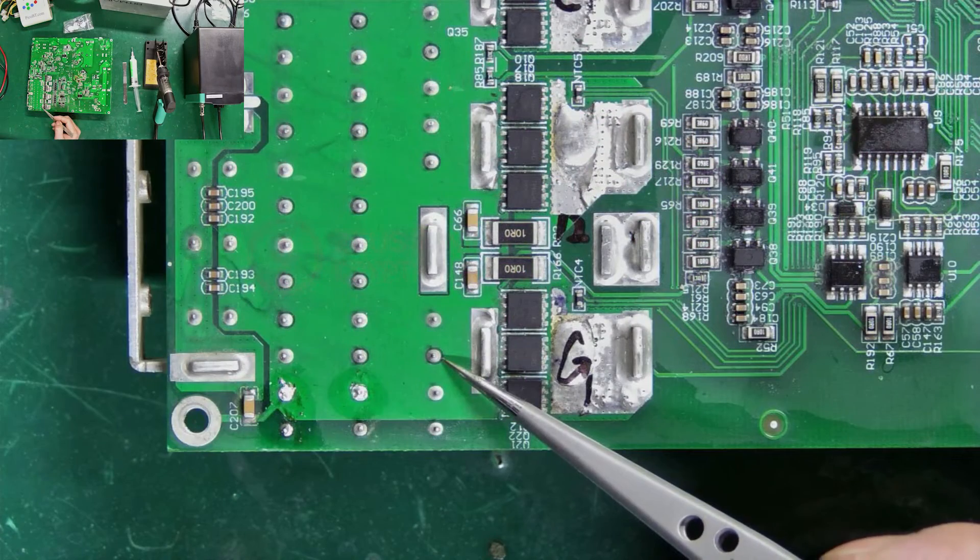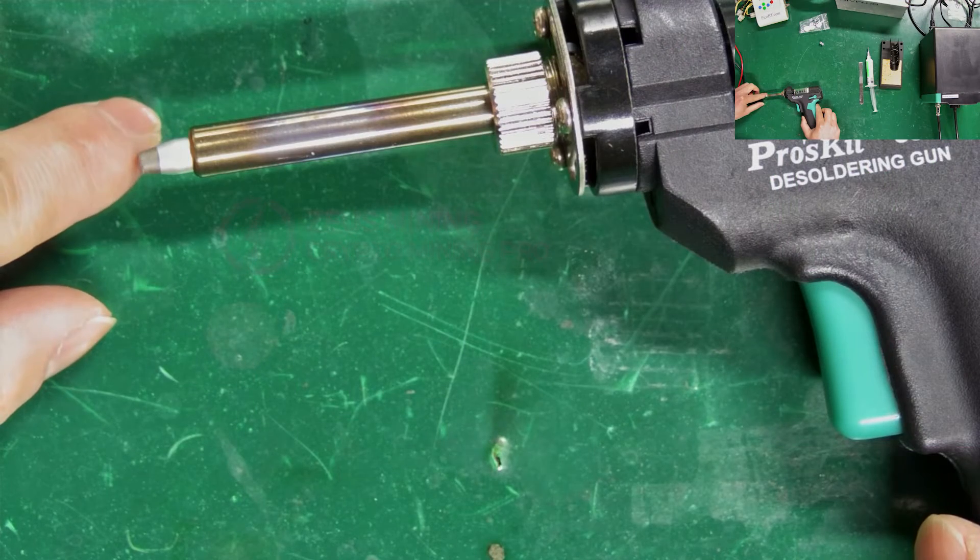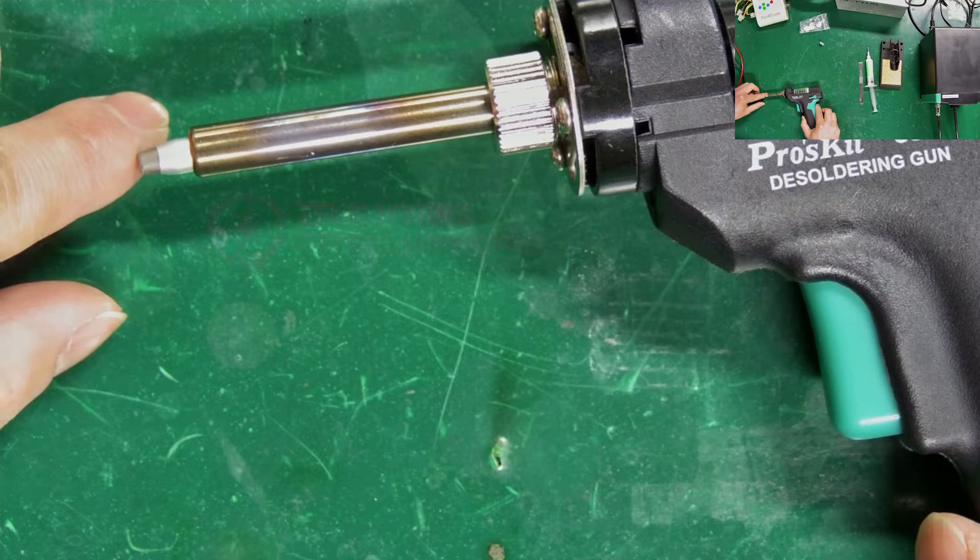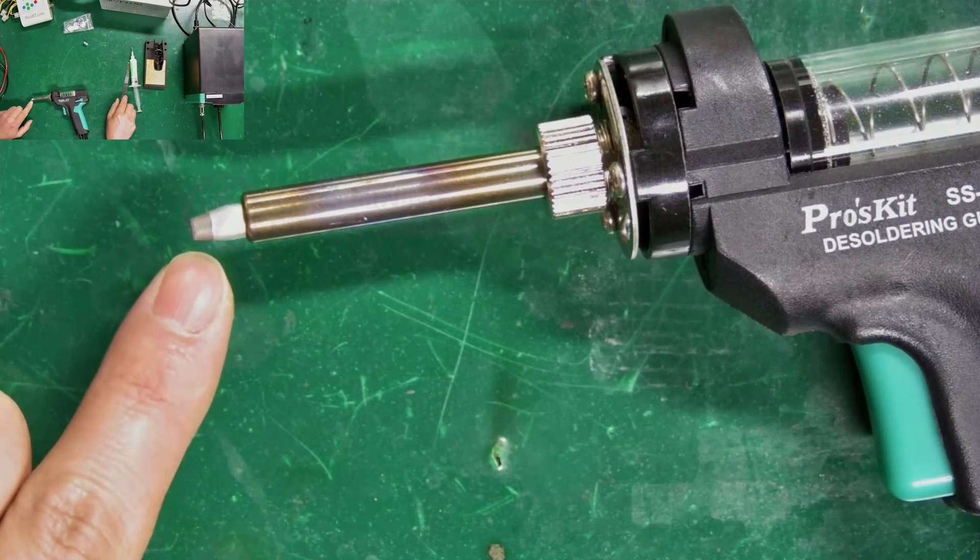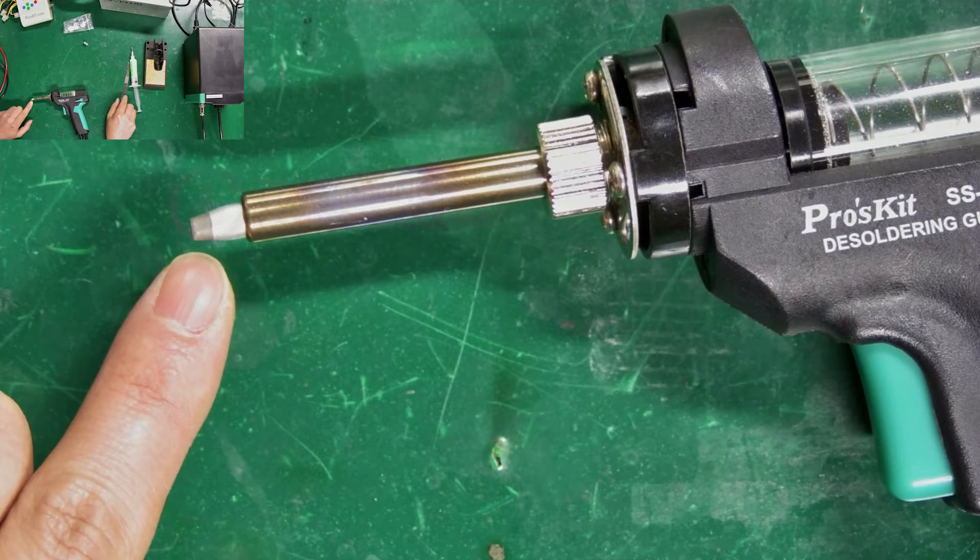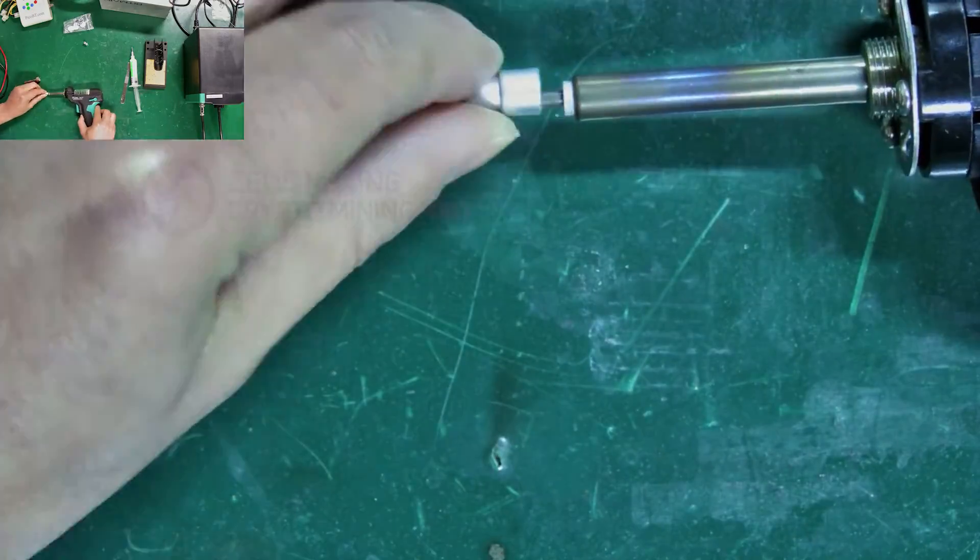Let's continue to remove these types of solid capacitors. We just removed the MOS tube using a 1.5 mm nozzle. This time, we're removing small pin capacitors and need to switch to a 1.0 mm nozzle.